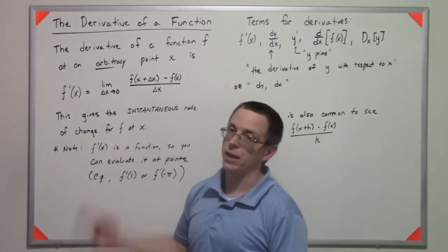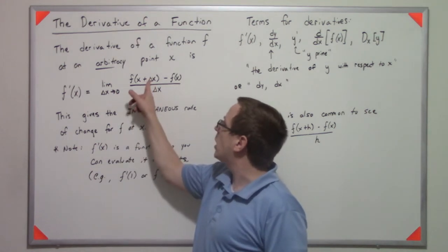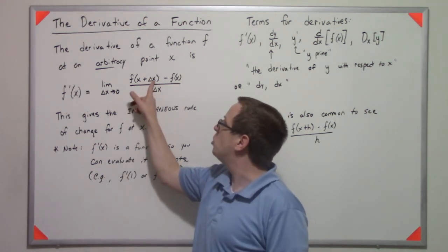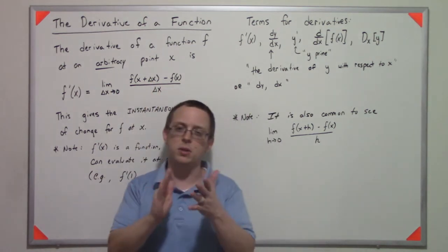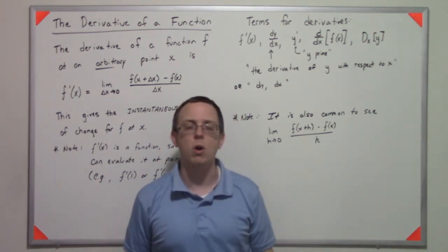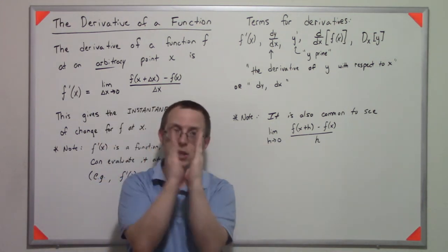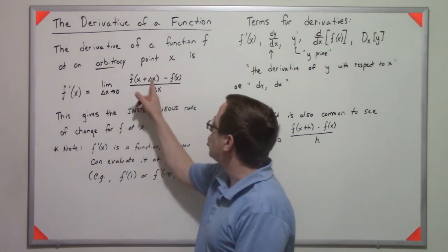So I have to write two less letters. The second issue is sometimes it can look like this is maybe two numbers multiplied together like it's delta times x, but it's not. Delta x is its own quantity.